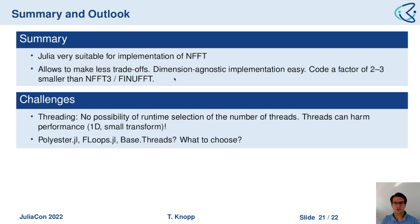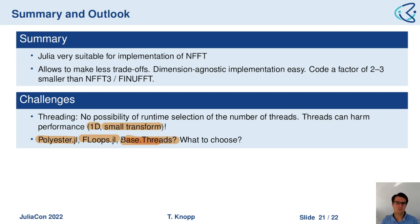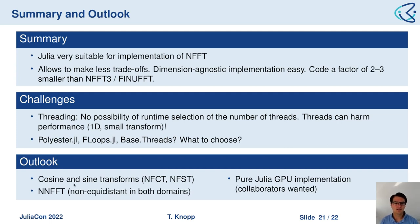Some challenges remain: with threading, we are not able to choose the number of threads at runtime. For small transforms in 1D, we would like to disable threads or use fewer threads than the user-specified global variable, and this is a current issue in Julia. Another open question is what threading package to use — Polyester.jl, FLoops.jl, or Base.Threads — and we need to arrive at a single solution.